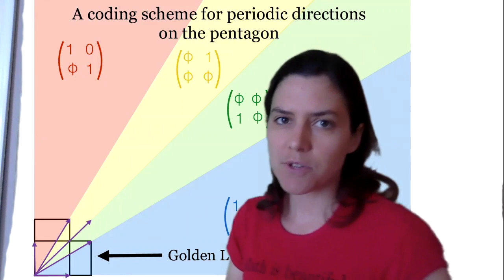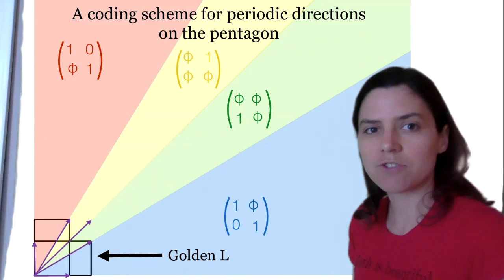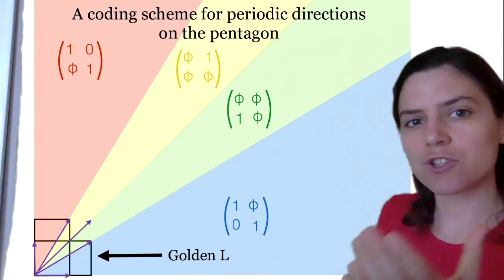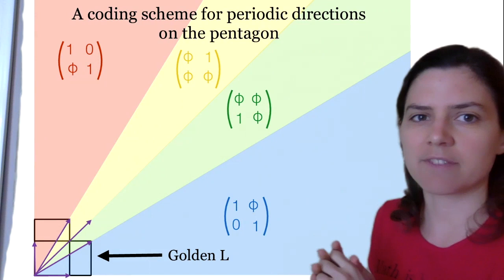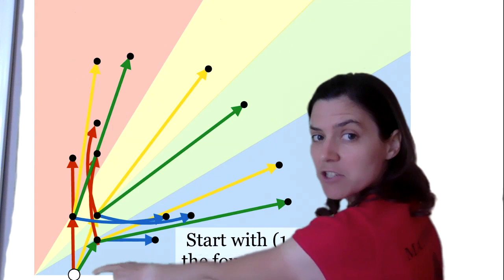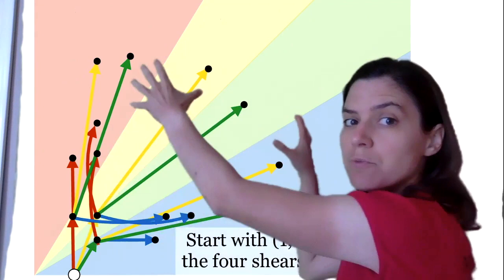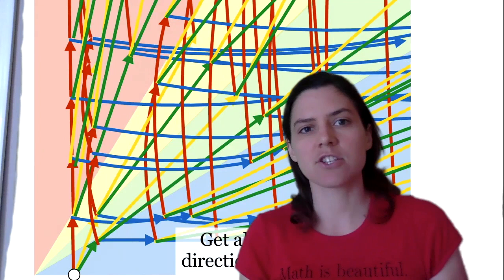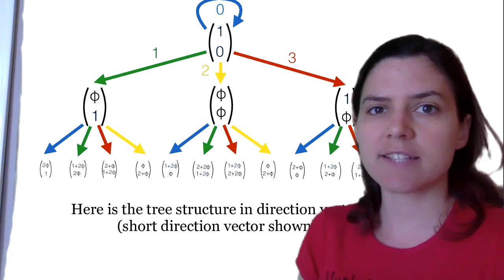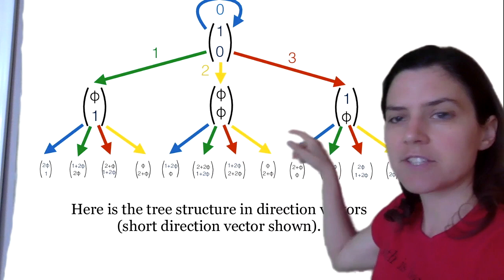Here's a coding scheme for periodic directions on the Pentagon. We put our golden L in the corner instead of the square we had originally. The golden L separates the first quadrant into four sectors, color coded with four different colors. We have four shears that take the first quadrant to each of those sectors, chosen to have determinant one. Again, we start with just the point (1,0) and apply the four transformations. At the first level, with the four transformations, we get three new points. Then from each of those, we apply the four transformations to get four new points. If we keep doing this, we get all of the periodic directions on the golden L.